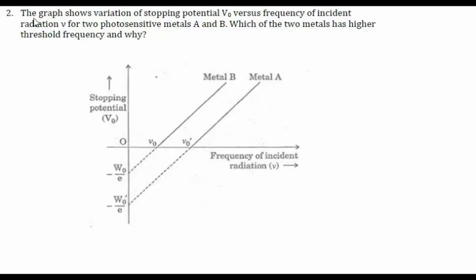Dear students, in this example we can see that the graph shows variation of stopping potential V_s versus the frequency of incident radiation ν for two photosensitive metals A and B. This is metal B and this is metal A. The question asks which of the two metals has a higher threshold frequency and why. From the curve, we can easily say that this represents the experimental photoelectric effect.